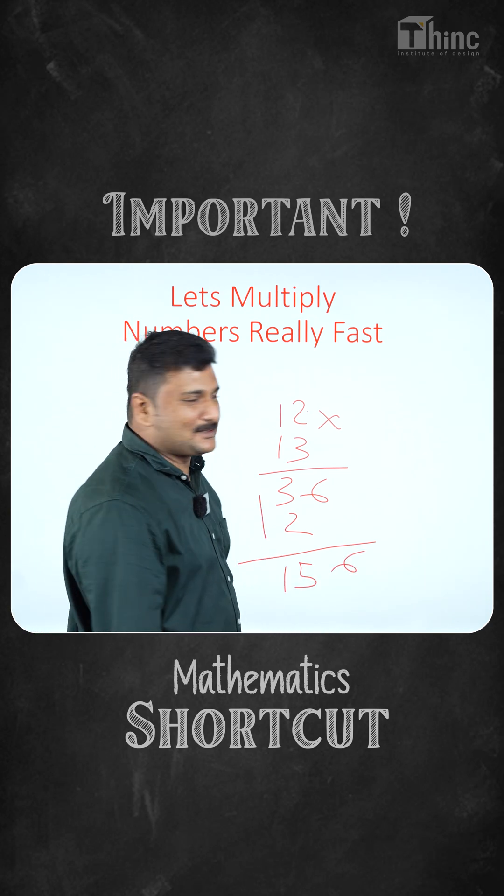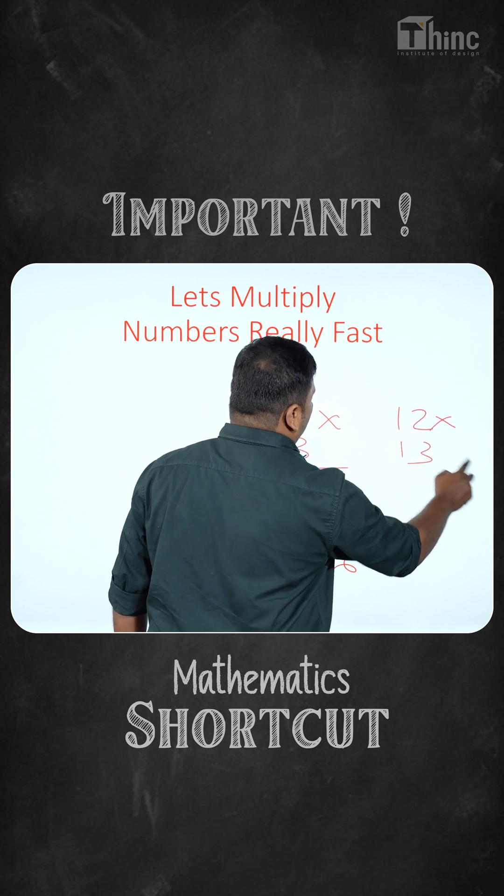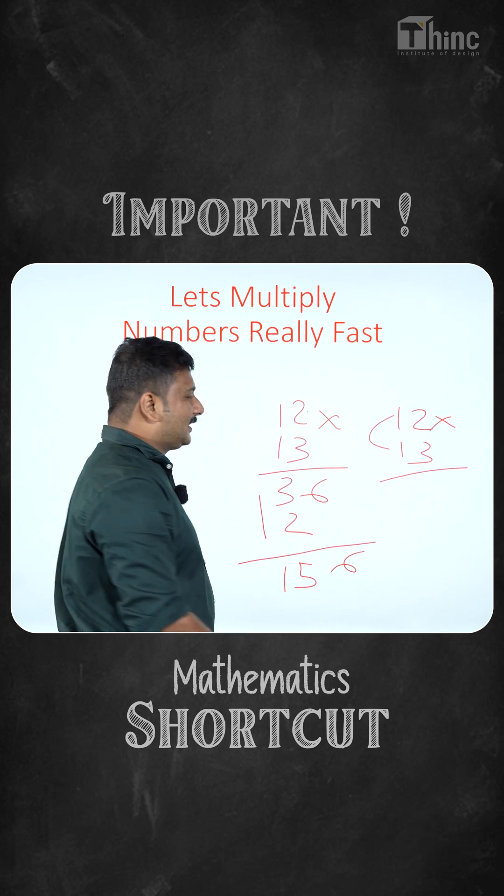But there is no need of doing all these. So what we can do is just multiply the first two digits. What is 1 x 1? That is 1.